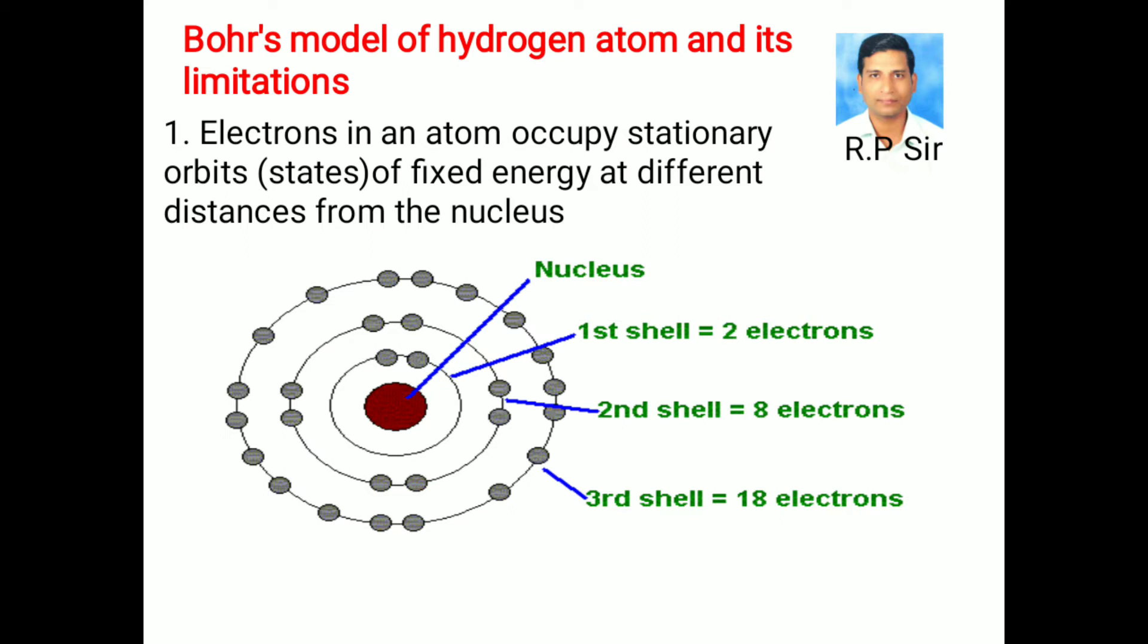According to Bohr's model, electrons in an atom occupy stationary orbits or stationary states of fixed energy at different distances from the nucleus.